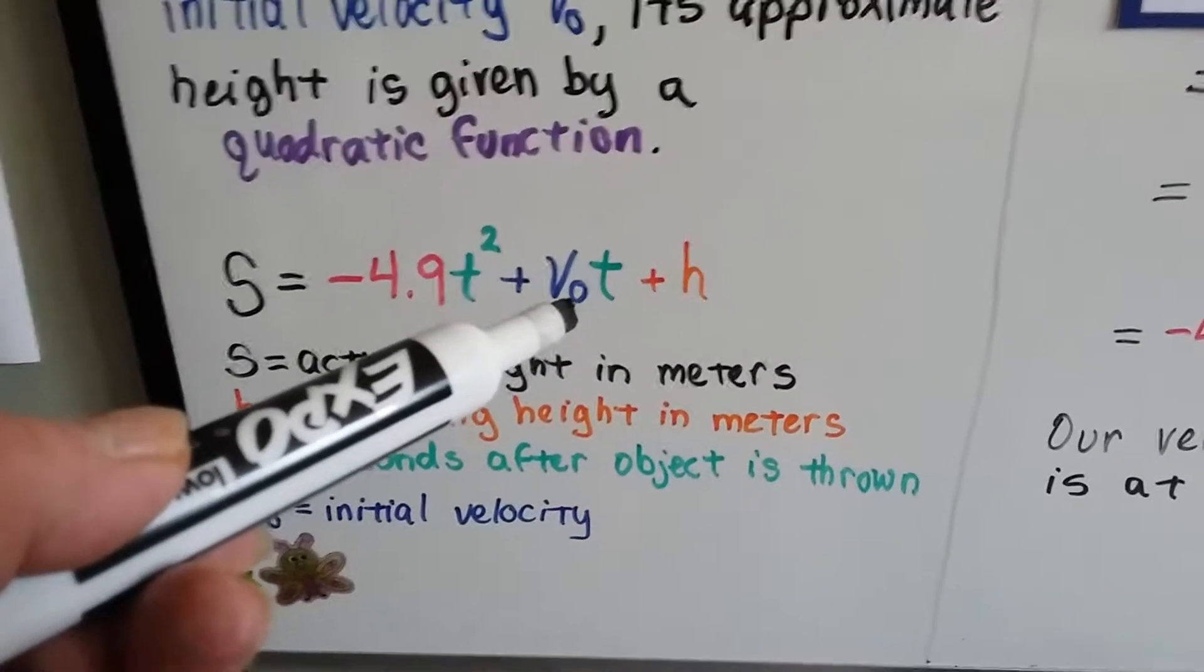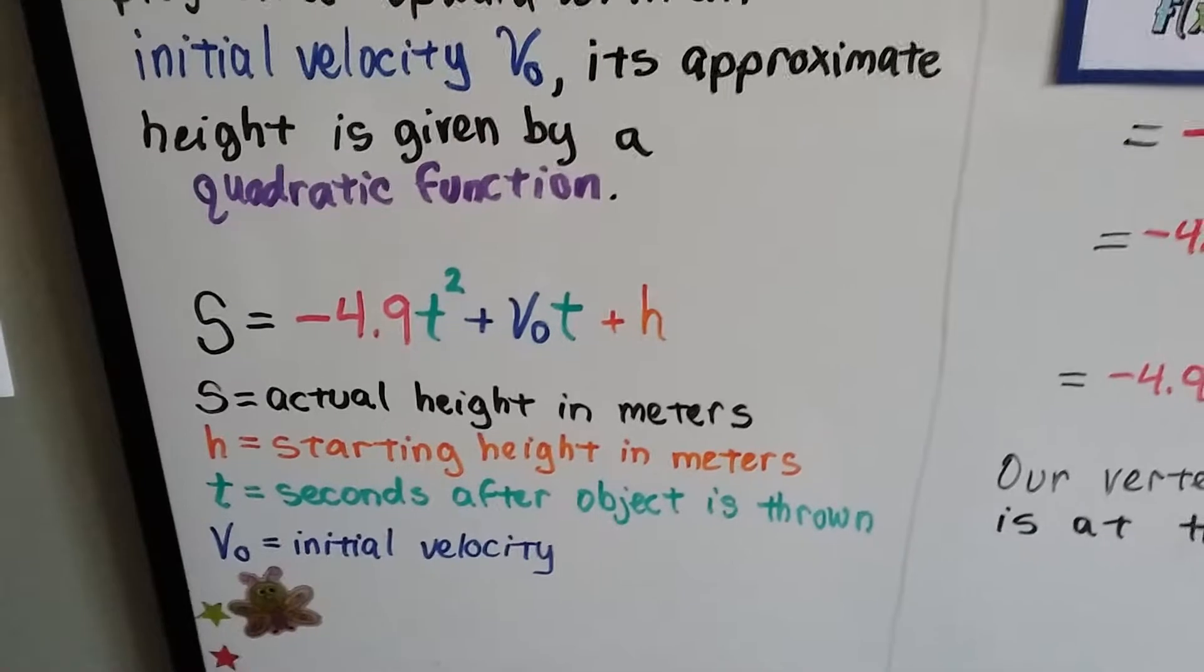V is velocity, and that little sub zero means beginning, the initial one at the start.